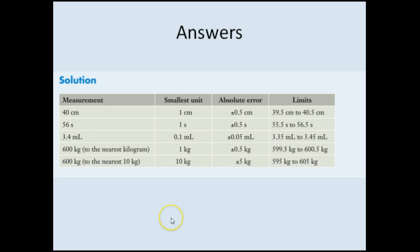Okay, you should have had a go now. Here's the solutions. So you can pause again to mark. As you can see here, like I said before, this was the smallest unit mentioned was ten kilograms. So it was plus or minus five kilograms. So you either had to add and subtract five kilograms to 600 kilograms for that one.